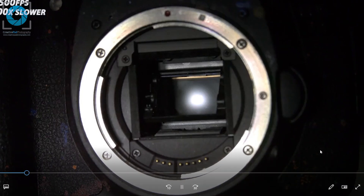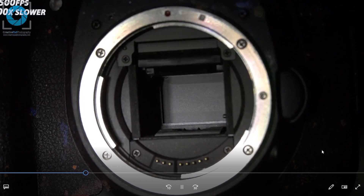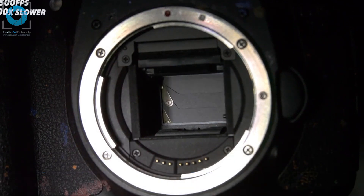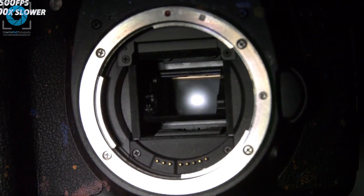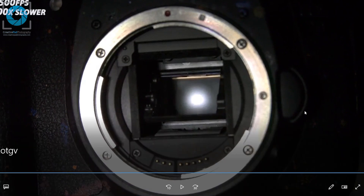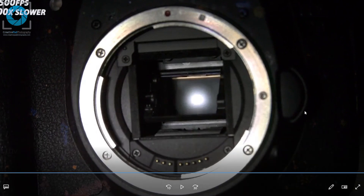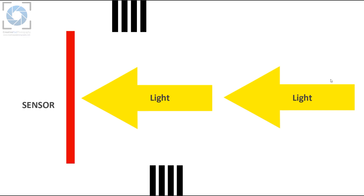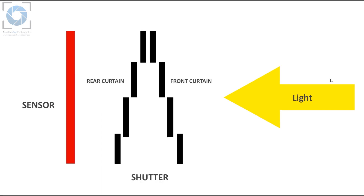As the video plays, you can see the mirror goes up, then the front curtain goes down and the rear curtain closes to finish the exposure. The time between the two curtains opening was the time when light was allowed to pass through and fall on the sensor — and this is what we are interested in. Coming back to the diagram, the shutter opens, allows the light to pass through and fall on the sensor, and then shuts down.